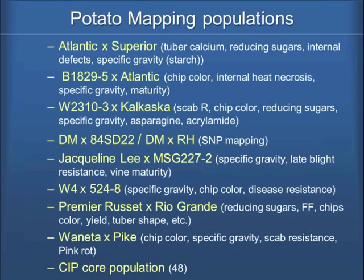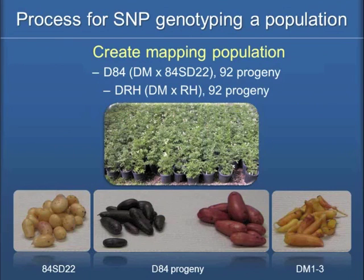Out of that work comes this double monoploid that has ended up helping us for a whole different purpose — helping with the sequencing and also for our mapping purposes. To move forward with the mapping, we thought one of the simplest things to do is to start crossing DM to some other diploid lines so that only one parent is segregating, simplifying the genetic analysis. We initially developed a mapping population for DM by 84SD22, a Chacoense-tuberosum hybrid. After the SNP genotyping data came in, we felt we needed a second population, so we contacted Richard — he had the cross DM by RH already in hand, sent us the DNA, and we SNP genotyped that. Having two populations is more informative than a single population.